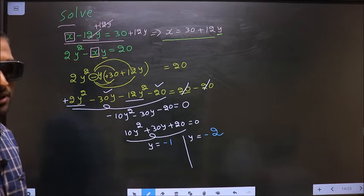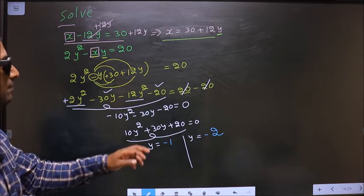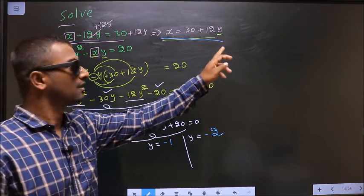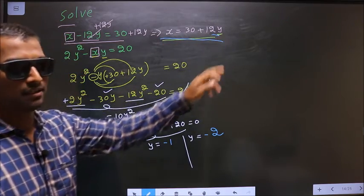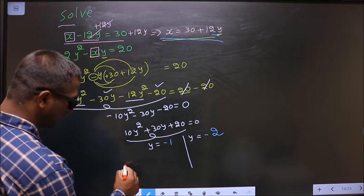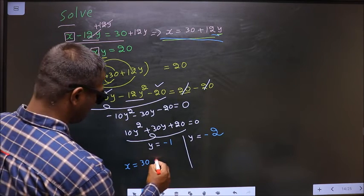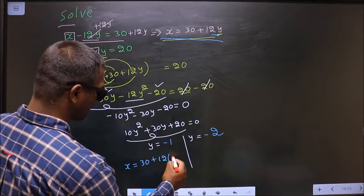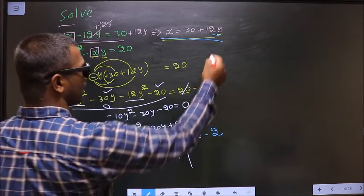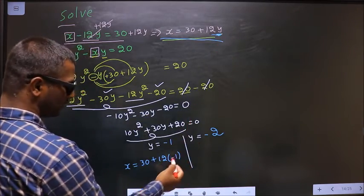So now to get x, replace y in this equation. That is here. So I get x equal to 30 plus 12 times minus 1. In place of y, I wrote minus 1.